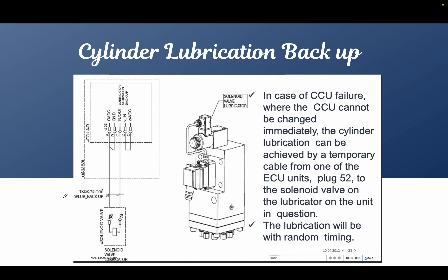Now suppose this lubrication system fails. Whenever you are doing isolation, in that case you have to make sure that the lubrication of the cylinder liner is maintained by the help of a plug which is called a temporary plug, which needs to be installed. The lubrication is then provided with random timing so that in case of isolation of a particular unit, you need to provide lubrication to the liner.